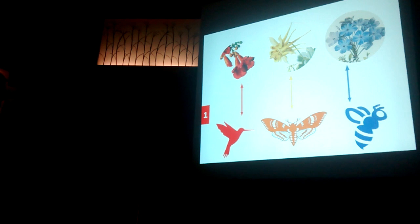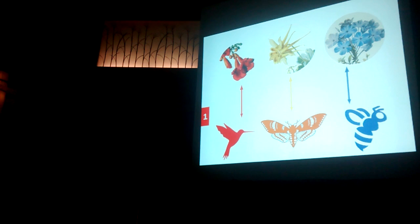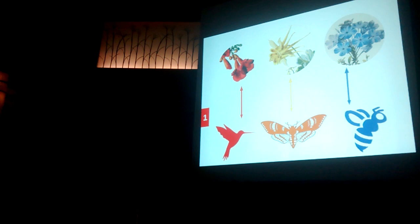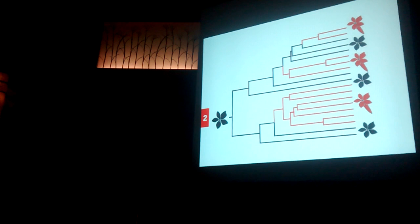First, different pollinators exert selective pressures that may vary in intensity. And second, even if we tend to think of plant-pollinator relationships as one-to-one, in the field what we see is that they tend to be really generalized. So this obscures the relative role of each pollinator.